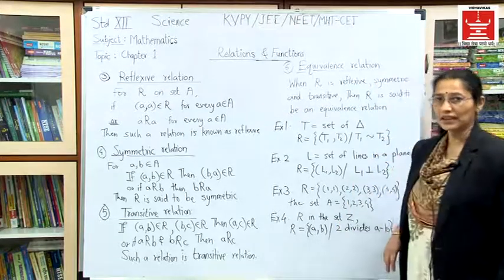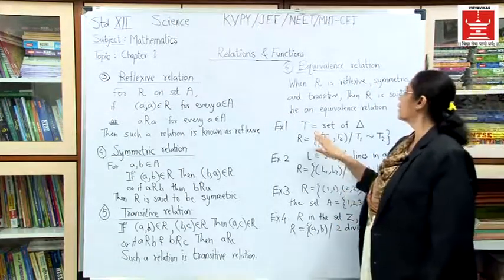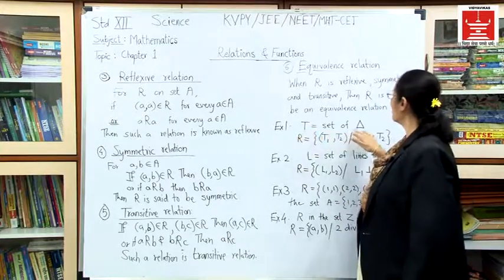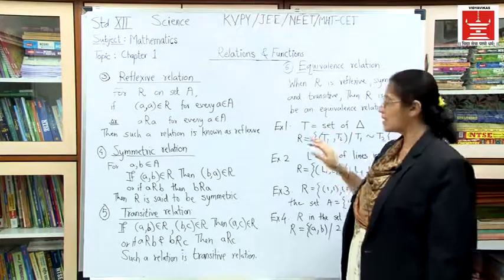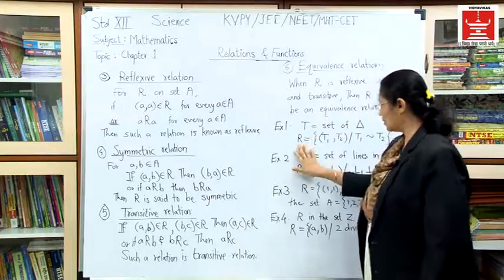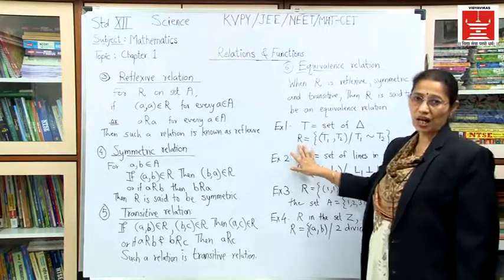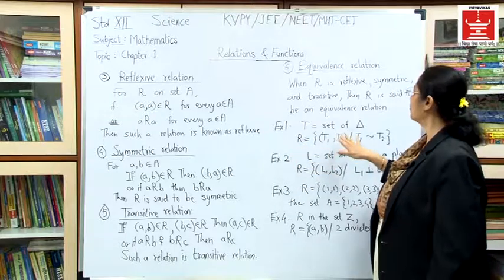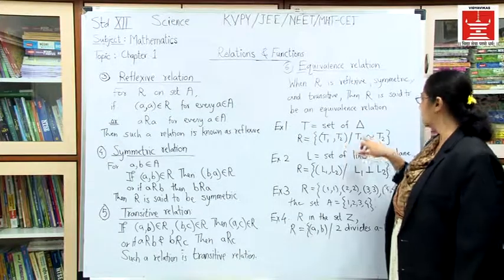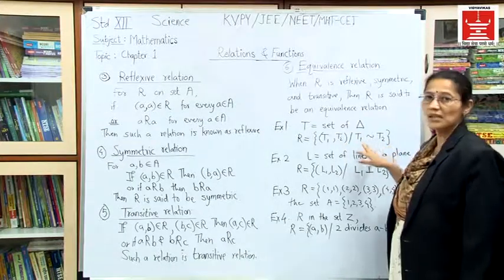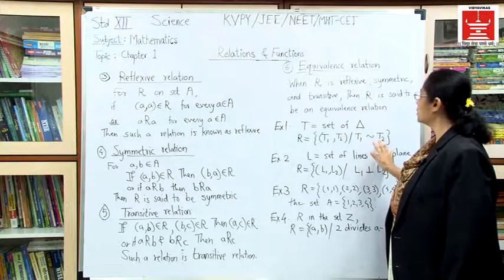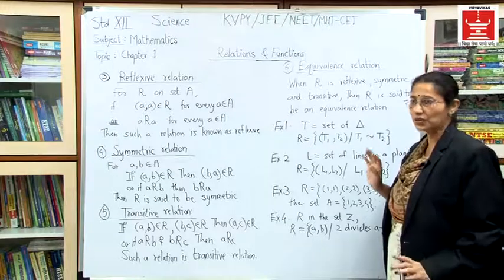We will discuss each and every example. Here we have defined the set T as the set of all triangles, and the relation R is defined such that we consider two triangles where the two triangles are similar to each other.